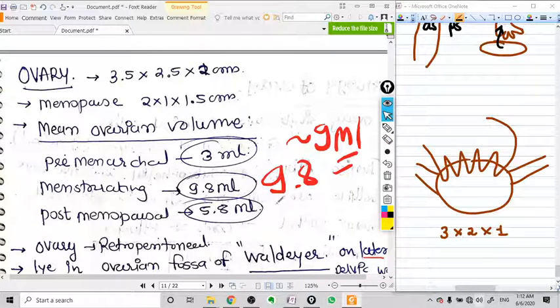Pre-menstrual and post-menstrual ovarian volume decreases because the ovarian volume depends on the hormonal stimulation from the pituitary. That's why it gets changed.